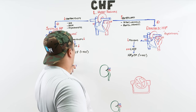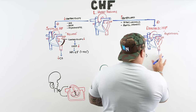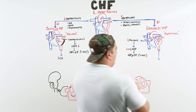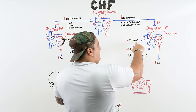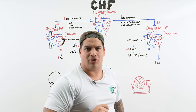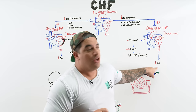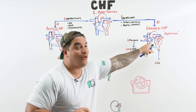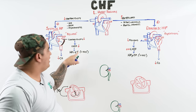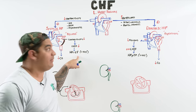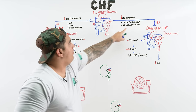Both systolic and diastolic heart failure result in low cardiac output, but for different reasons. Systolic (HFrEF) has a reduced ejection fraction due to contractility problems and a dilated ventricle. Diastolic (HFpEF) has a preserved ejection fraction but reduced filling because of a hypertrophied ventricle. Understanding these causes — contractility problem vs. high afterload — is very high yield.